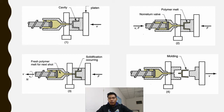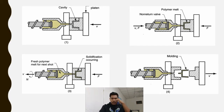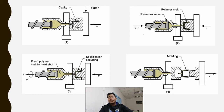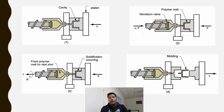The clamping unit opens and closes the mold on each injection cycle. The injection molding machine consists of a barrel fed from one end by a hopper containing a supply of plastic pellets. Inside the barrel is a screw which rotates for mixing and heating the polymer, and acts as a ram to inject molten plastic into the mold. A non-return valve near the tip of the screw prevents melt from flowing backwards along the screw threads.